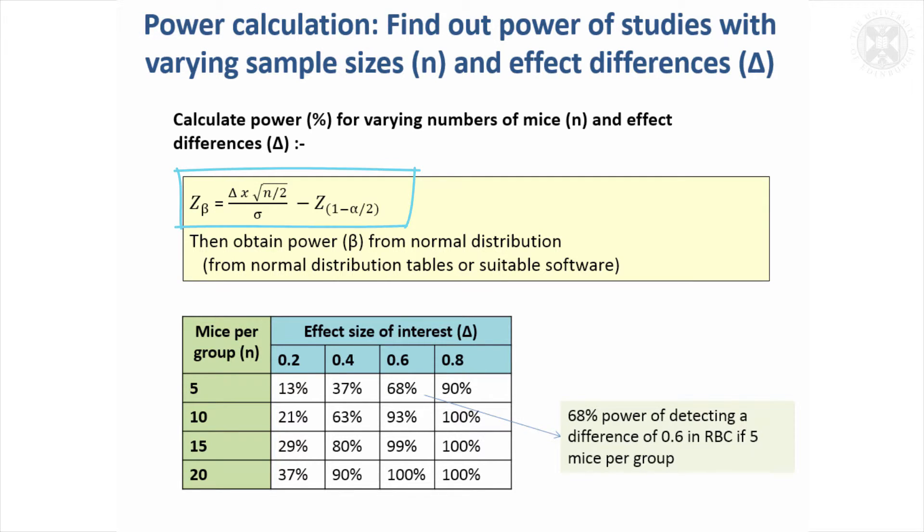Using the formulae rearranged in terms of power, we'll look at both different numbers of mice per group and different effect sizes. If we're interested in an effect size of 0.6 in red blood cell counts and vary the number of mice per group, you can see what the power of the study would be. If you've only got five mice per group, the power would be just 68%.